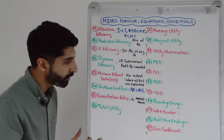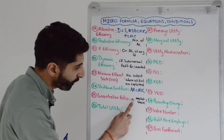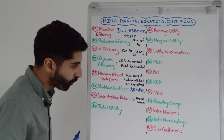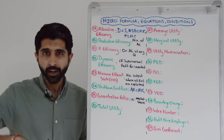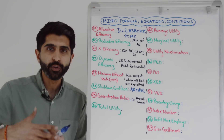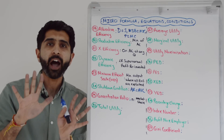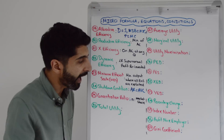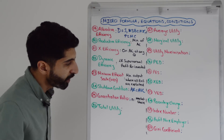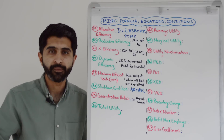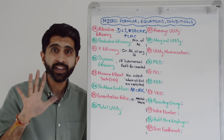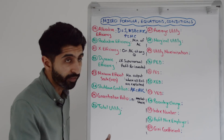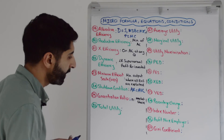A concentration ratio — you will always write it in this form: N, the number of firms, and then their total market share. For example, if you need to calculate a five firm concentration ratio, N would be five. The market share will be adding up the market shares of the five individual largest companies, and then that total market share goes there.